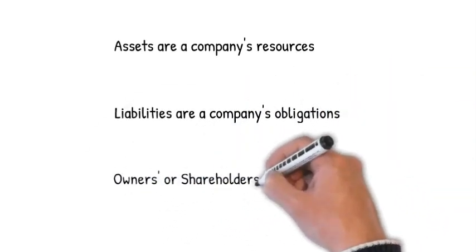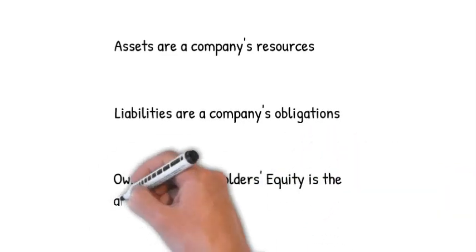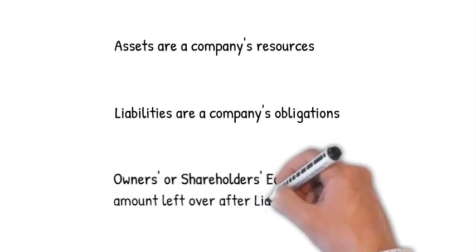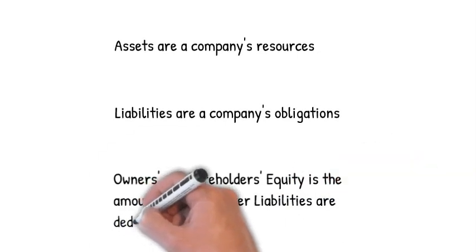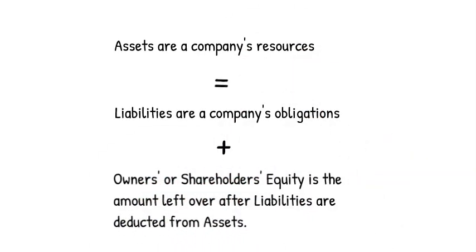Assets are a company's resources — things the company owns. Examples of assets include cash, accounts receivable, and inventory. From the accounting equation we see that the amount of assets must equal the combined amount of liabilities plus owner's equity. Liabilities are a company's obligations, amounts the company owes. Examples of liabilities include loans, accounts payable, salary, and wages payable. Owners or shareholders equity is the amount left over after liabilities are deducted from assets.